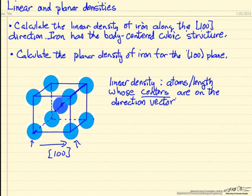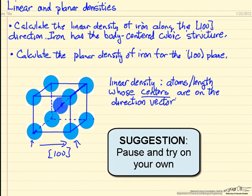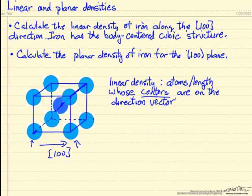Linear density: atoms per length whose centers are on the direction vector. So if I look at the [100] direction, then this atom and this atom are on this vector. And so for the distance of the unit cell, let's call this distance a, which is the length of all the sides of this unit cell. Distance a, I have half of this atom and half of this atom. So I have a total of 1 atom per distance a.